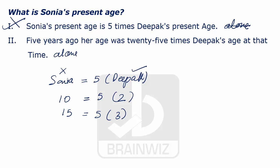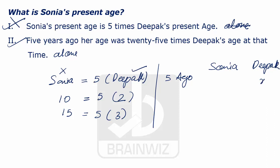Let's try to check statement two alone. In statement two it has been told that five years ago the age of Sonia is 25 times the age of Deepak. Let's assume Deepak is x; at that point of time Sonia is 25 times of Deepak. Again, the same situation arises — we have no idea about the age of Deepak. If Deepak is one year, Sonia will be 25 years; if Deepak is two years, Sonia will be 50 years. So statement two alone is not sufficient to answer.